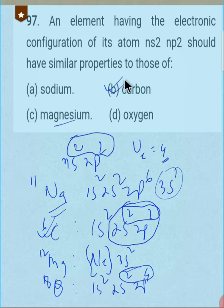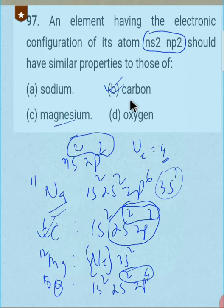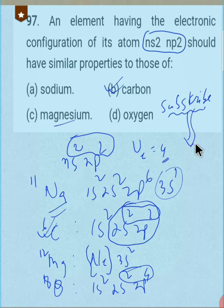The concept here is that elements having the same number of valence electrons will possess similar properties. The element with configuration ns²np² has four valence electrons like carbon, so it will have similar properties to carbon. Thank you for today — please like and share this video with your friends, and if you are new to the channel please subscribe.